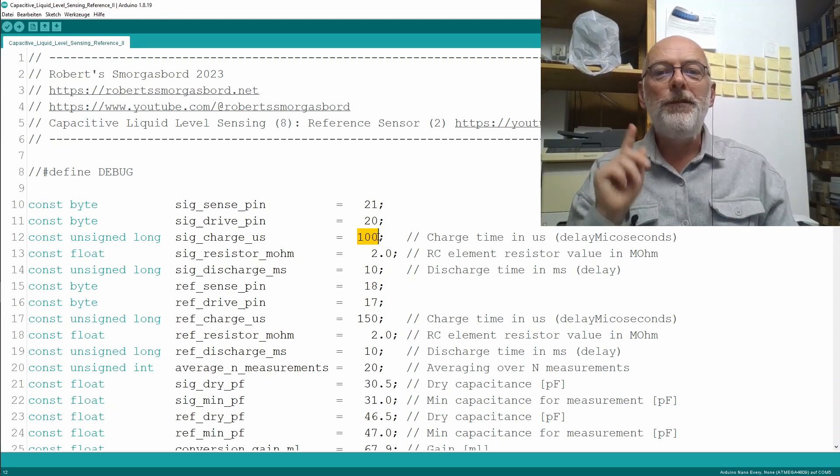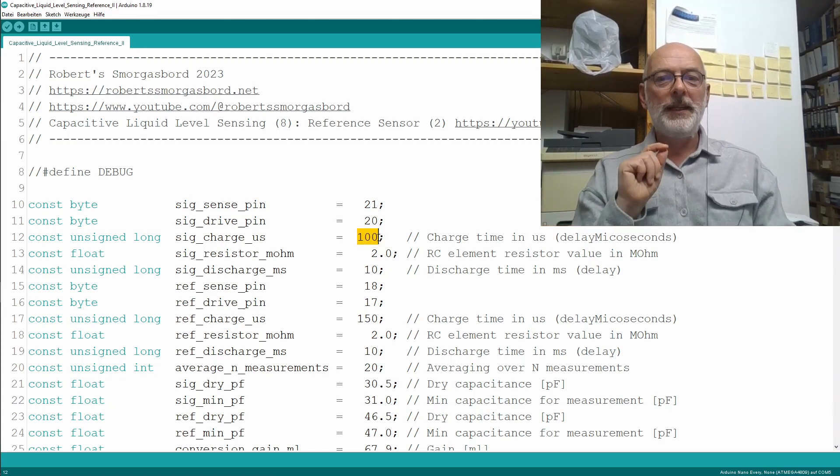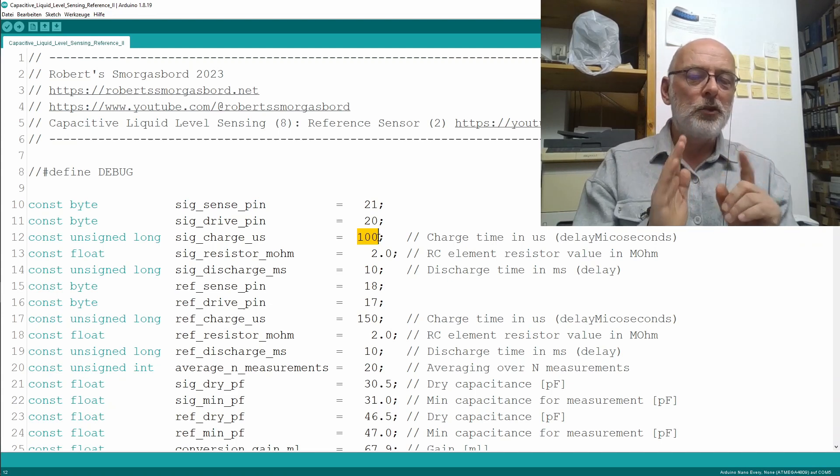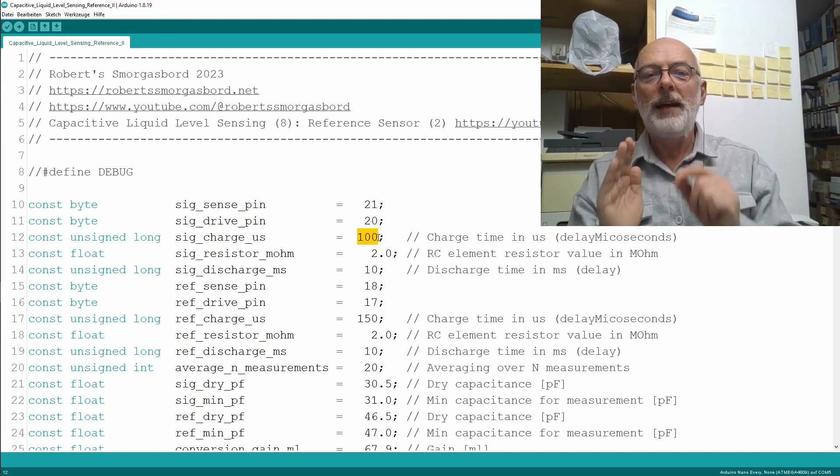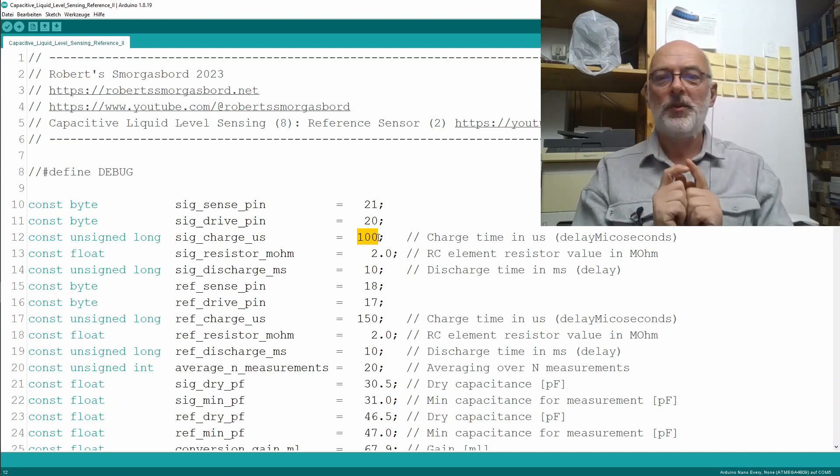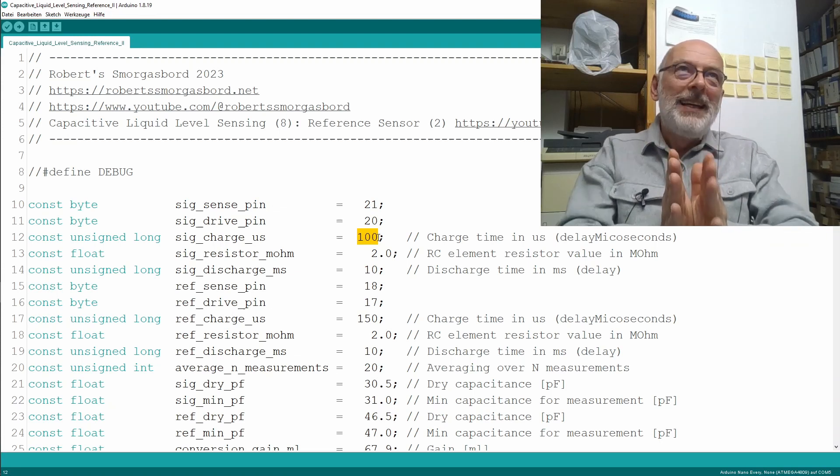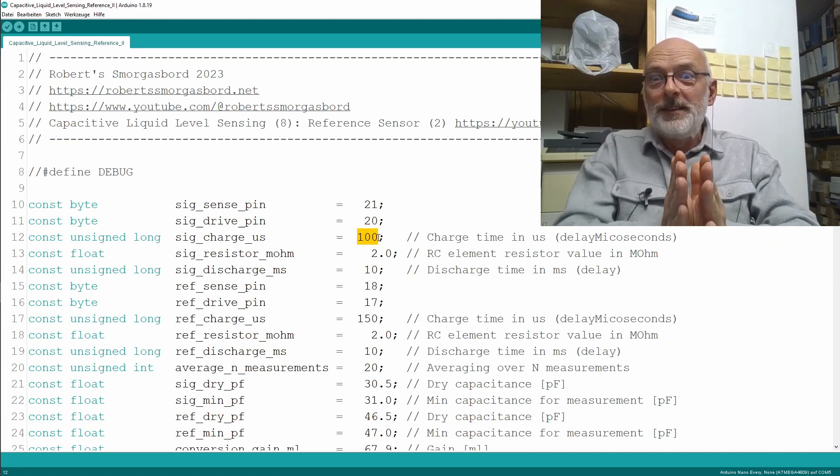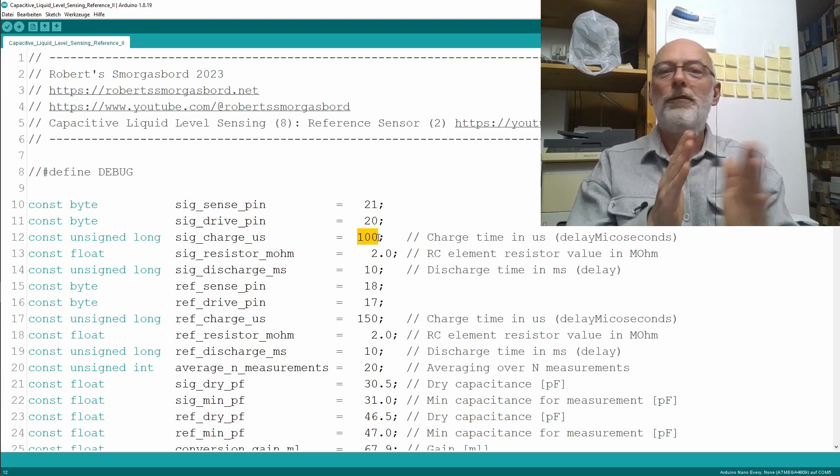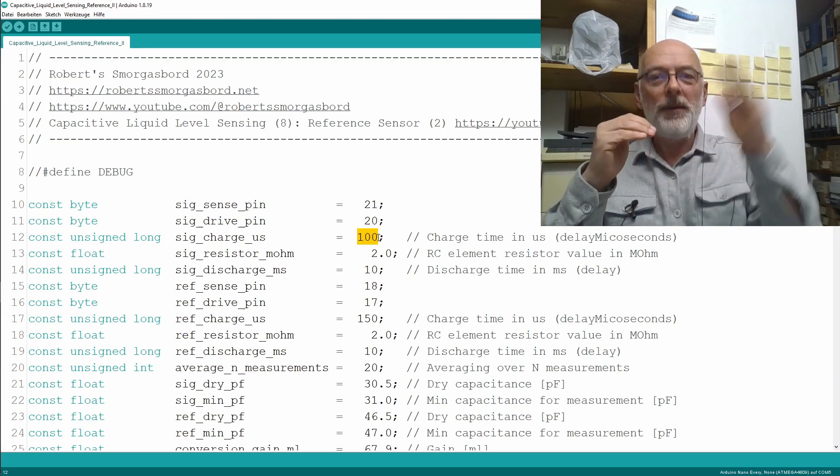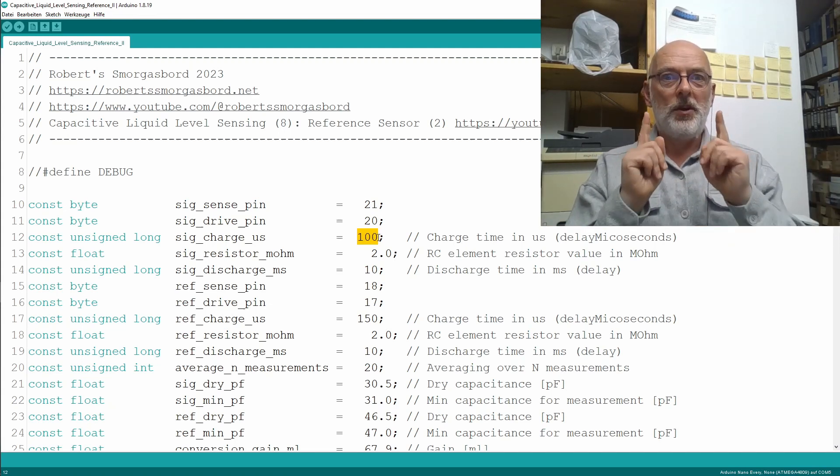Because if you do a delay microseconds of, for example, 100, that could mean in extremes 99.5 microseconds or 100.5 microseconds. So, if you make it, let's say, only 10 microseconds, the charge time, then you already have an error of plus minus 5% only from the charge time.